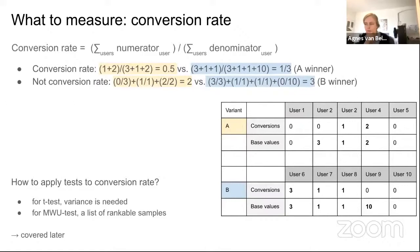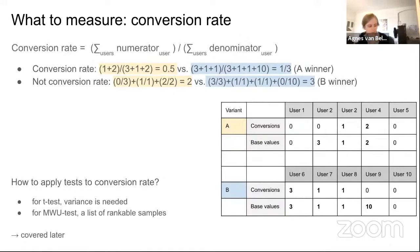You might wonder how to test this single conversion rate value. For example, if you apply a t-test you need the variance of your measurements. And if you apply the Mann-Whitney U test, another commonly used non-parametric test, you need a list of rankable samples per variant — which you don't have if you only have a single number. This will be covered later.